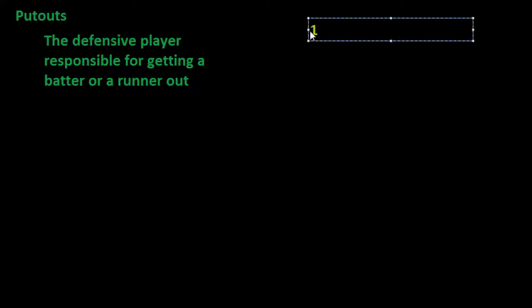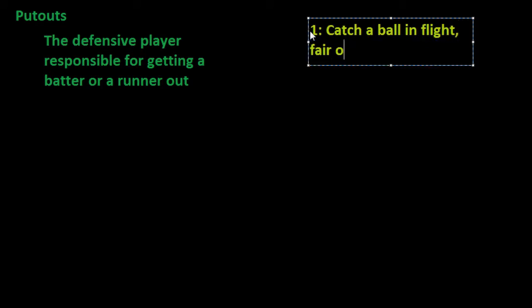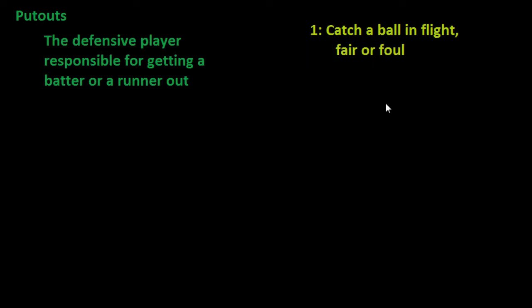This main way has three parts to it. The first is that the defensive player catches a ball that is in flight — catch a ball in flight. It doesn't matter if it's fair or foul. If a batter hits a pitch and it's in the air and it is caught, then that batter is out. We would give credit to whoever the defensive player was that caught it — he would get credit for the put-out.